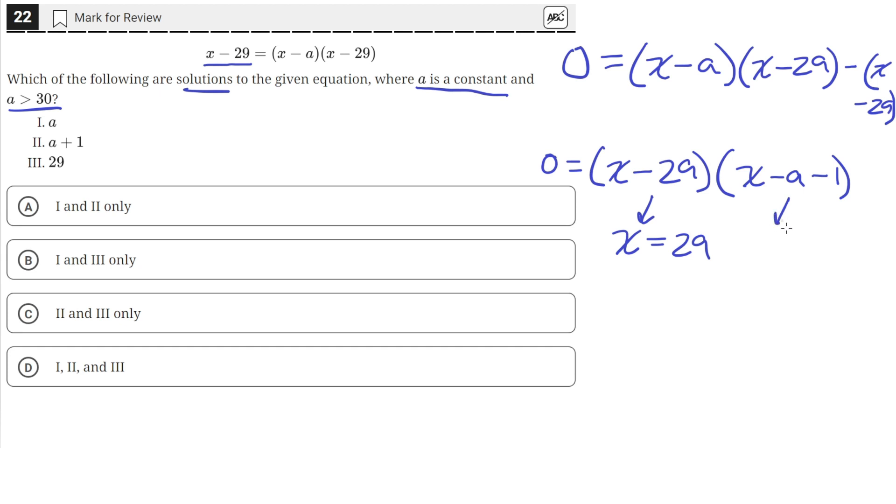And then from here the solution is x equals a plus 1. Because when x equals a plus 1, a minus a is 0 and then 1 minus 1 is 0. So then this right hand side is 0 times this quantity will still be 0.